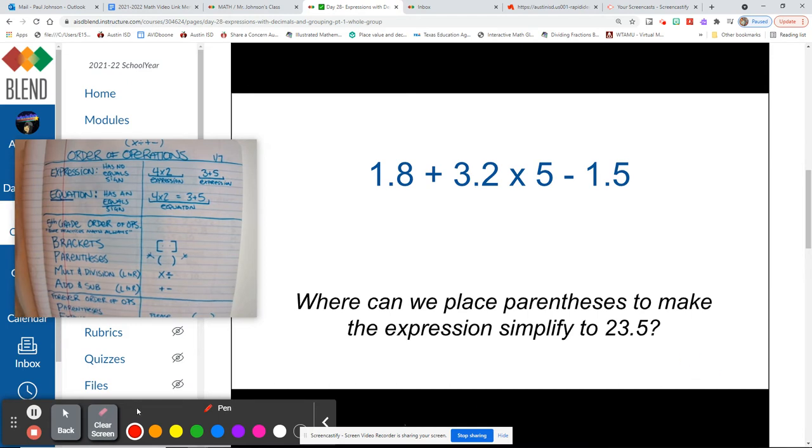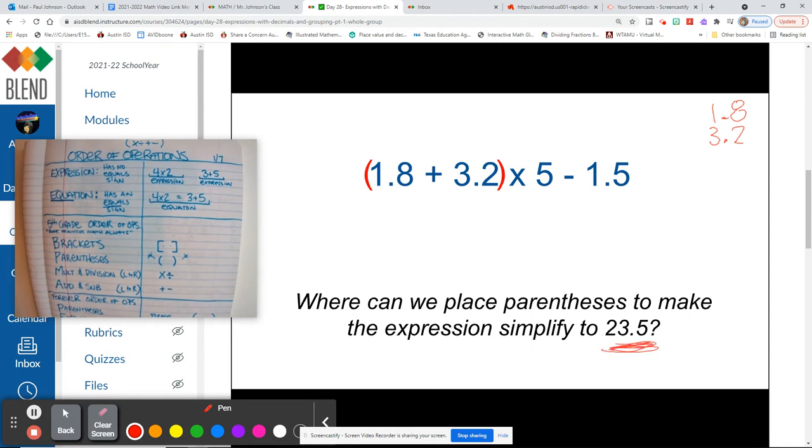So if you said, or you thought, or you saw the spoiler, and you want to put the parentheses around 1.8 plus 3.2, you'd be absolutely correct. Because check this out, we need to make a big enough number to get over 23.5 if we're going to be subtracting at the end and getting this number 23.5.